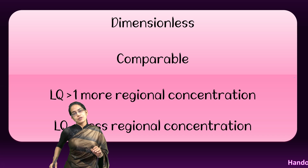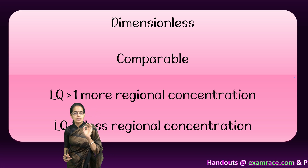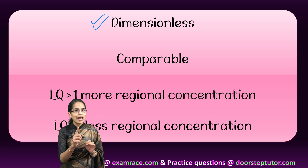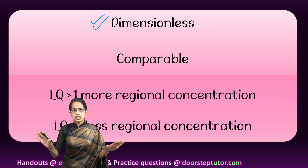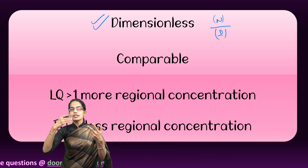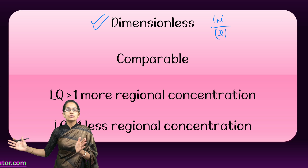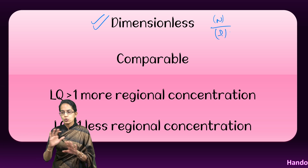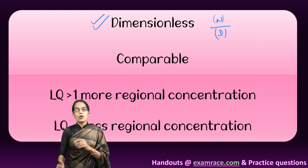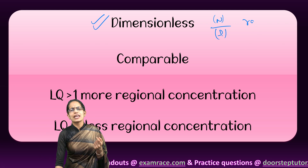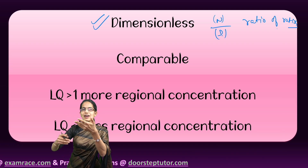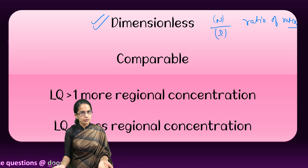There are four important concepts to understand about the location quotient. First, it is dimensionless — since the numerator and denominator are equivalent ratios, the final value has no unit attached to it. Simply put, it is a ratio of ratios: one ratio divided by another ratio.